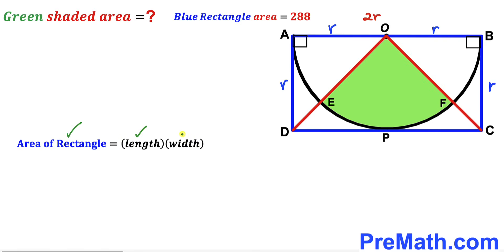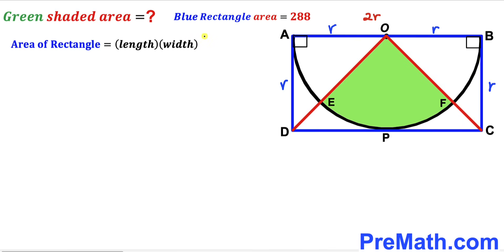Now let's recall the area of a rectangle formula: area equals length times width. In our case, the dimensions of the blue rectangle are r and 2r, and the blue rectangle area is 288. So we fill in the formula: 288 equals 2r times r, which simplifies to 288 equals 2r².